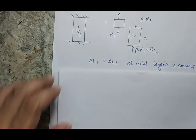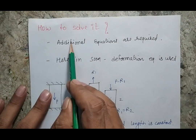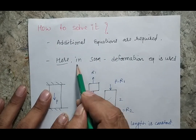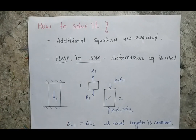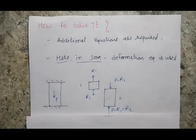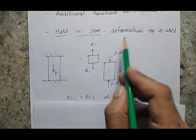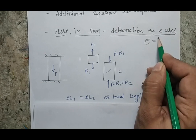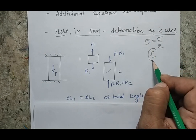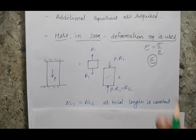To solve a statically indeterminate problem, we need additional equations. In Strength of Materials, we typically deal with low degrees of indeterminacy. Civil engineers handle higher-order problems with different methods. For this course, the additional equation comes from the deformation equation. Using the elastic relationship — E = stress/strain, where stress = P/A and strain = ΔL/L — we can derive the deformation equation: ΔL = PL / (AE).